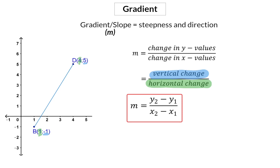So if we wanted to make use of the formula to determine the gradient of our given line, we would start with the y value of 5 and subtract the y value of minus 1, divided by the x value of 4 minus the x value of 1, and this will give us 6 over 3, which simplified gives us a gradient of 2.